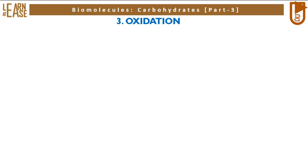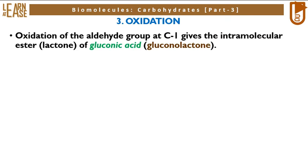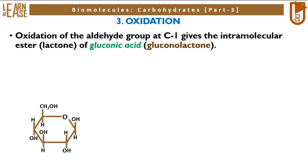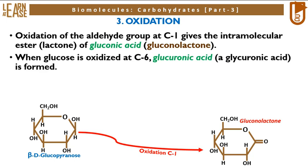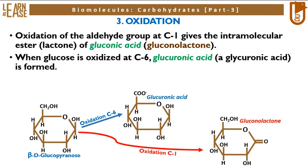The third reaction is oxidation. Oxidation of the aldehyde group at C1 gives the intramolecular ester known as a lactone of gluconic acid, termed gluconolactone. The image shows the oxidation of beta-D-glucopyranose at C1 yielding gluconolactone. When glucose is oxidized at C6, glucuronic acid is formed, as shown in another reaction where C6 of beta-D-glucopyranose is oxidized to give glucuronic acid.